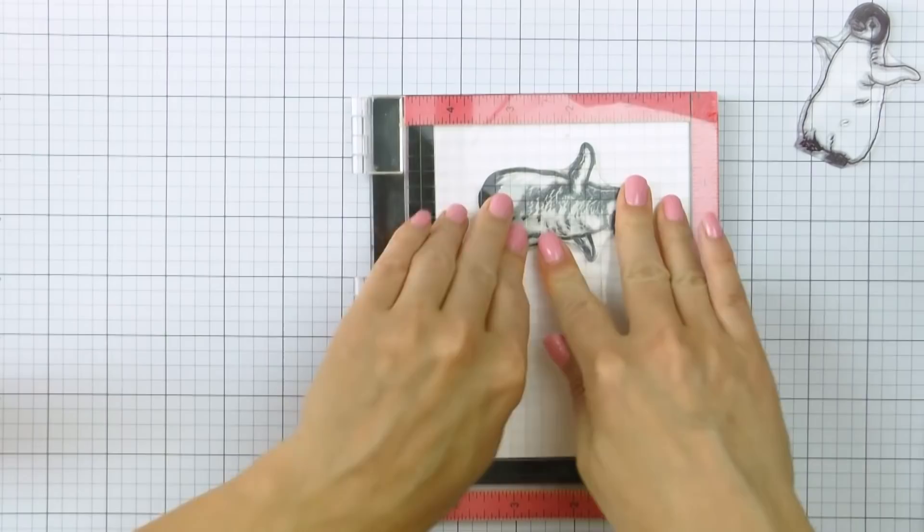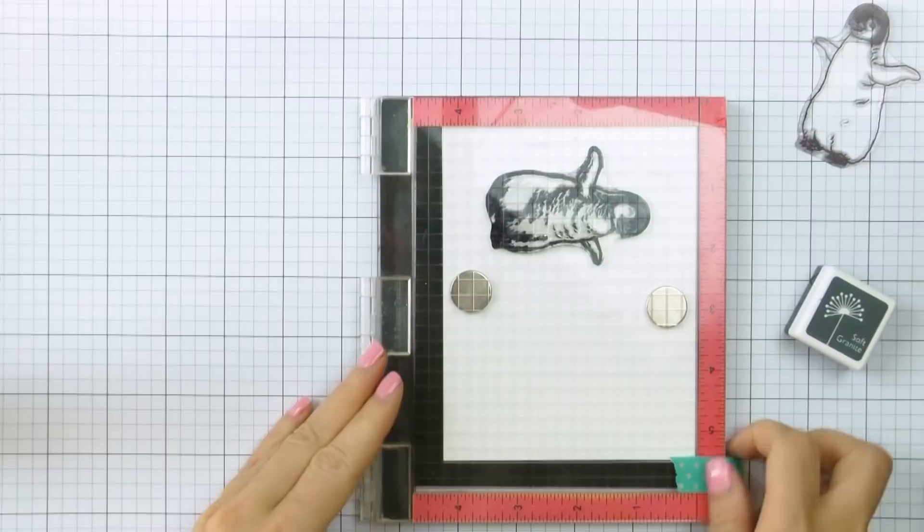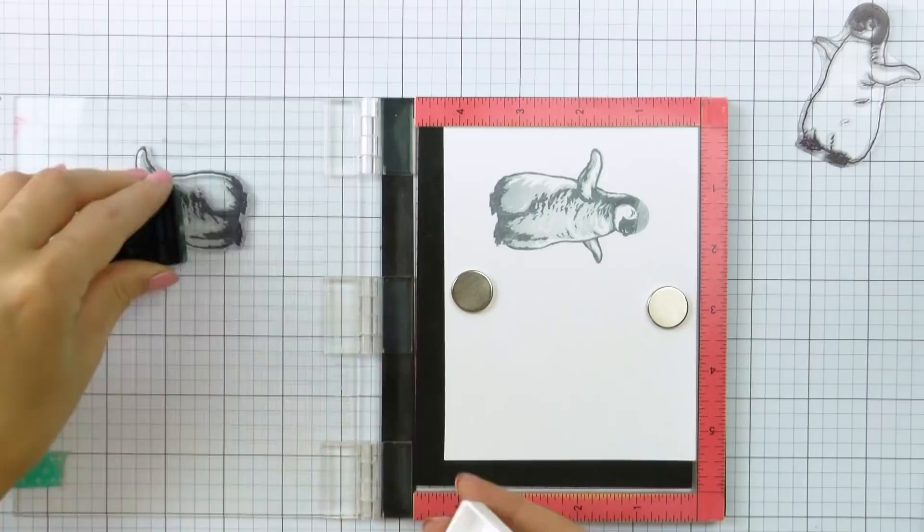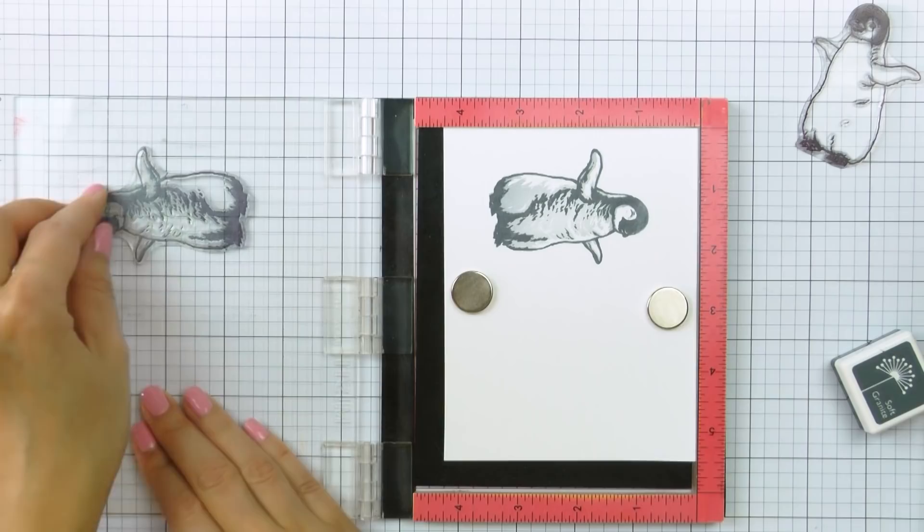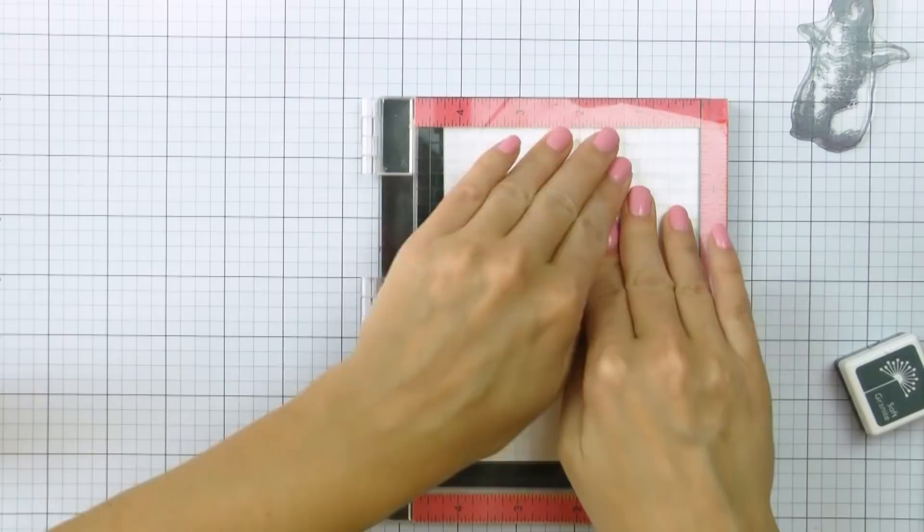I am going to align the second layer and will stamp it using soft granite. Now it is a little bit more difficult to align these since the base layer is stamped in such light color of ink, so it is best to take your time and not rush when aligning the next layer over a very faint stamping to ensure best results.